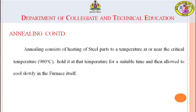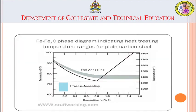This is the annealing temperature curve. There are two types: process annealing and full annealing, which we will study in the next slides. The curve shows the upper critical temperature — the material is heated to that level and then allowed to cool.